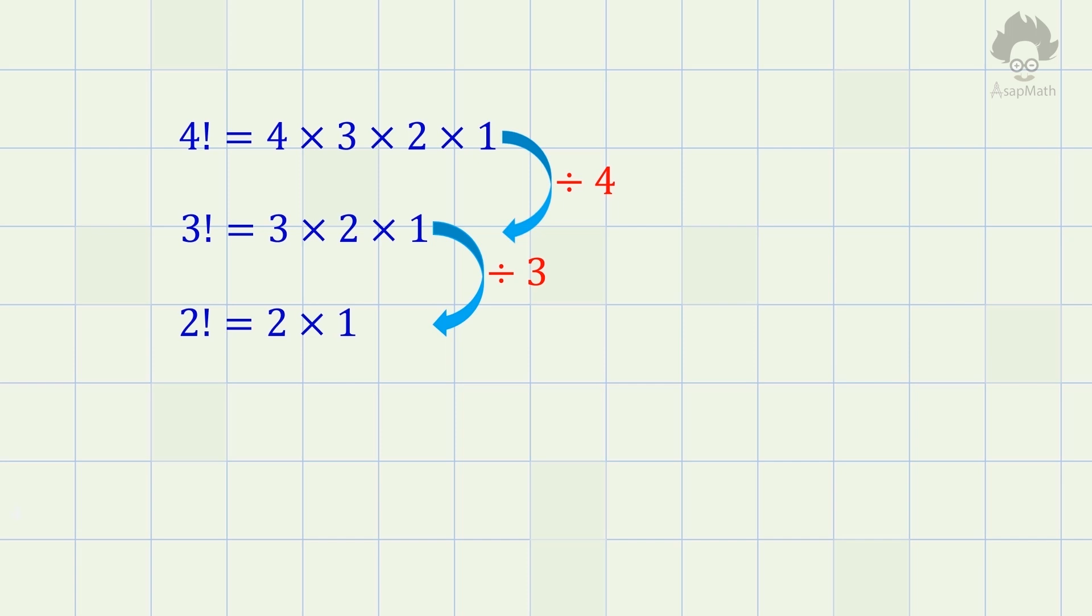Considering the above pattern, factorial 1 should be equal to factorial 2 divided by 2. The answer is 1, and it matches with the definition.